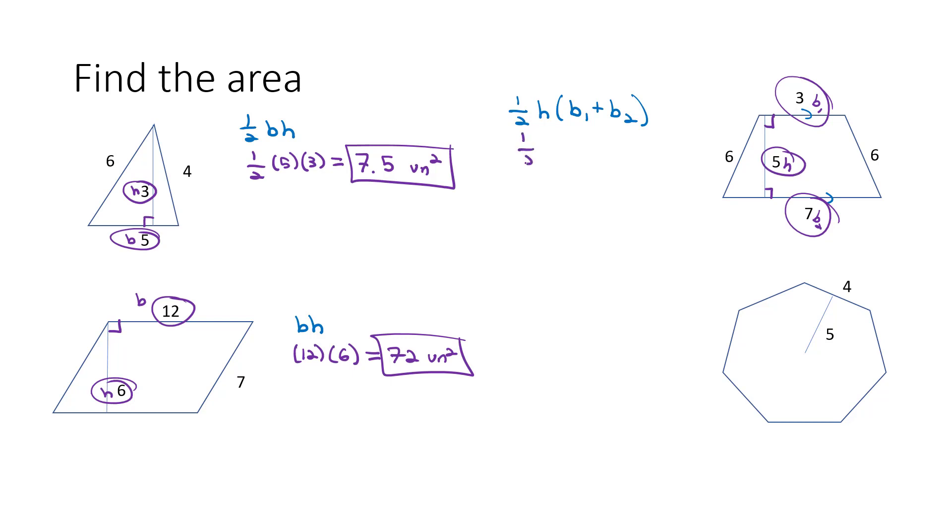So let's plug in what we know. 1 half times the height, which is 5, times base 1, which is 3, plus base 2, which is 7. To help us with order of operations, I usually do the addition first. 1 half times 5 times 10. And when I plug that in my calculator, we get 25 square units.